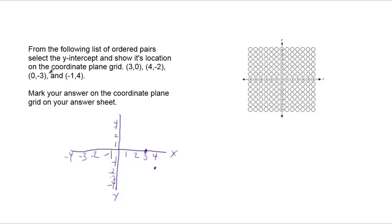The next one is (0,-3). We don't go anywhere left or right. We stay right here on the y-axis, and we go down 3 because it's negative 3: 1, 2, 3. That's our answer right there. We don't even need to keep going. This is the y-intercept. It's right on the y-axis. So we can bubble that in on our answer sheet: negative 3 on the y-axis.